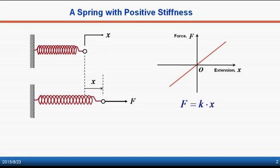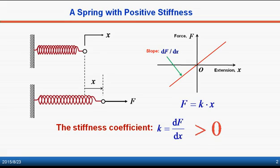This is also true for compressive loading. The slope of the straight line is a stiffness k, and k is a positive value.